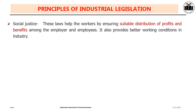First is the social principle or social justice. These laws help the worker by ensuring suitable distribution of the profit and benefit. If some of the profit is shared with the worker, the worker will be satisfied and will work very hard to improve the efficiency of the organization. It provides better working conditions, and if the working conditions are better, the workers are satisfied and the efficiency of the industry will be increased.